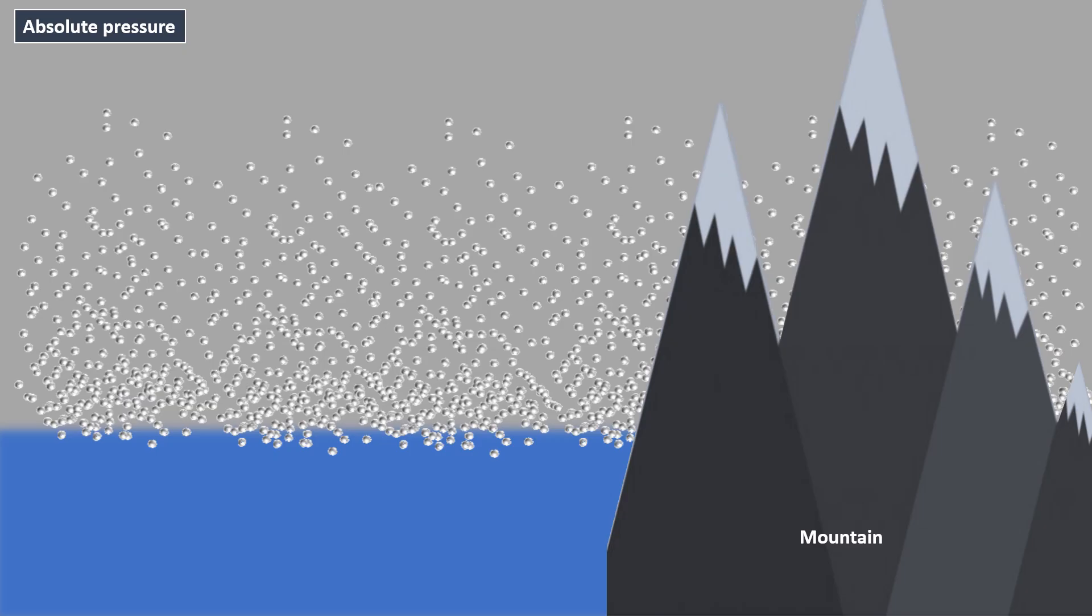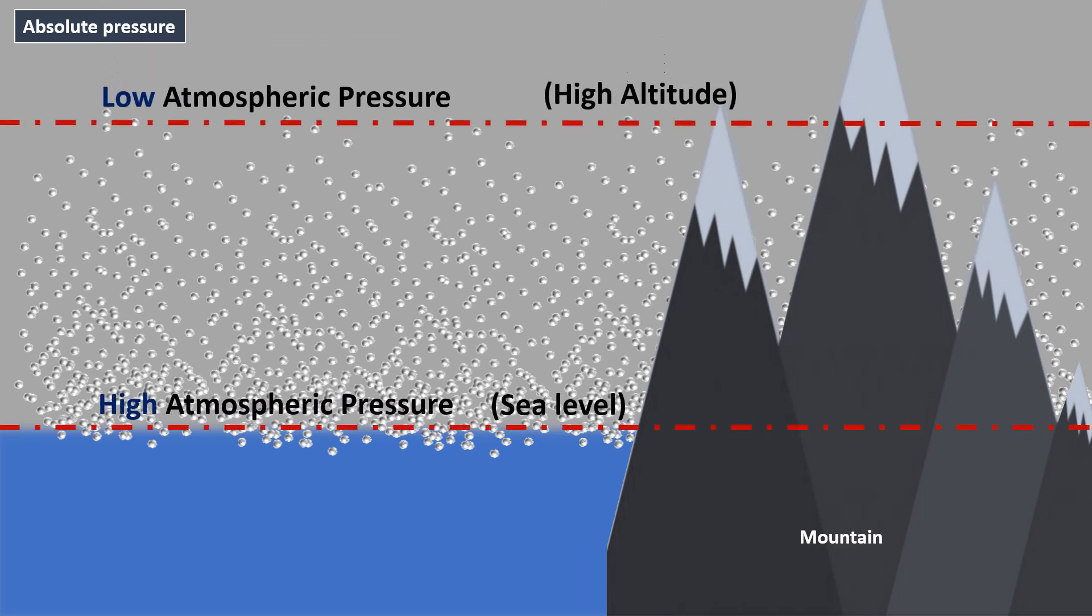The atmospheric pressure varies from place to place depending upon the altitude of the location and prevailing weather conditions. When atmospheric pressure varies, precise measurement can be achieved only if a fixed unchanging reference point is established.